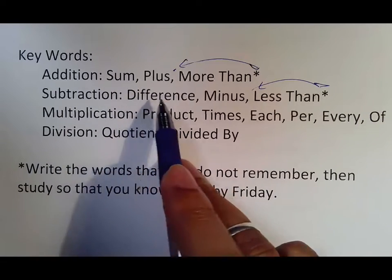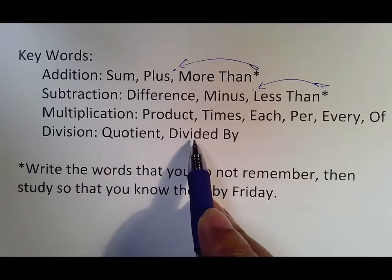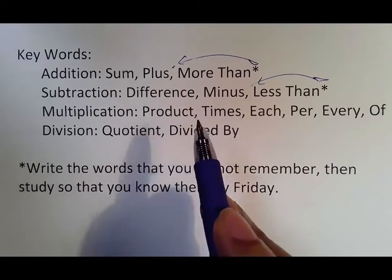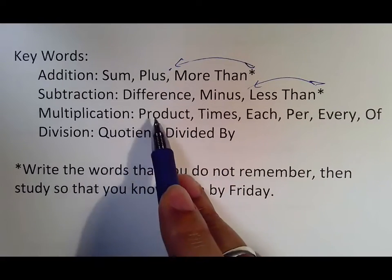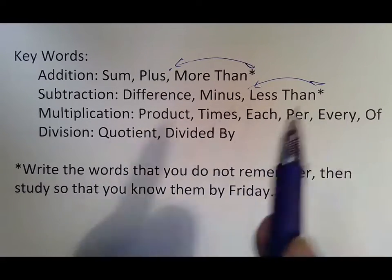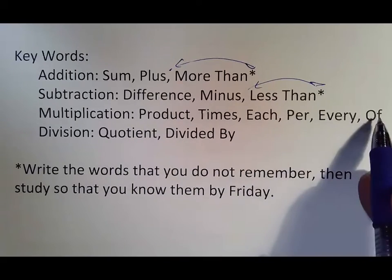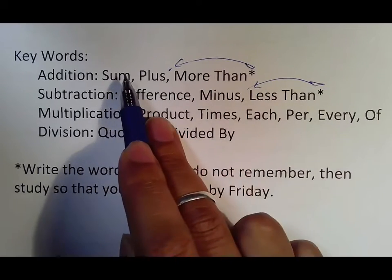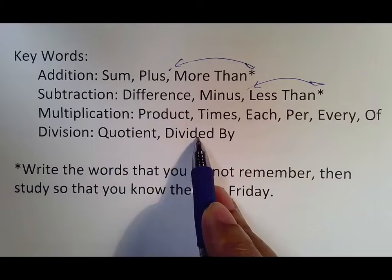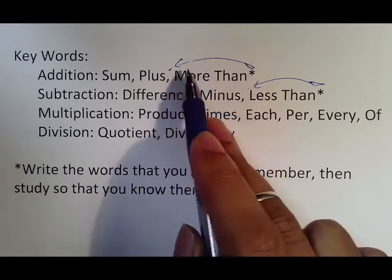Sum, plus, difference, minus, quotient, divided by—all stays the same. The reason I didn't read any of the multiplications is because, as we've hopefully learned, that's always number first, variable second. So that will never change.